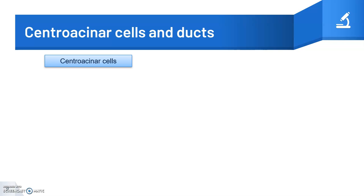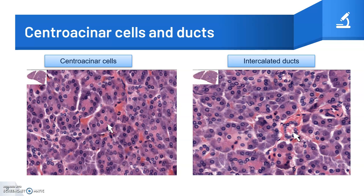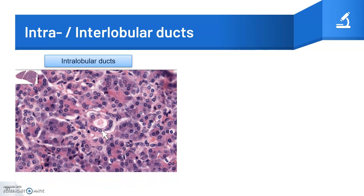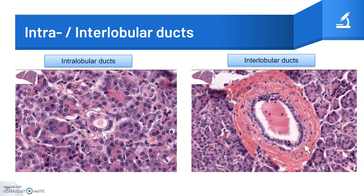Centroacinar cells are duct cells located within an acinus. Ducts start within an acinus and lead into short intercalated ducts with a simple cuboidal epithelium. Intralobular ducts are small ducts present within pancreatic lobules and drain into interlobular ducts. Interlobular ducts are larger ducts with simple columnar, stratified columnar, or stratified cuboidal epithelium supported by a thick layer of connective tissue.